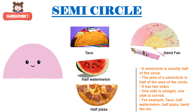Now let's learn the properties of semicircle. A semicircle is exactly half of the circle. The area of a semicircle is half of the area of a circle. It has two sides — one side is straight and another side is curved. For example, a taco, half a watermelon, half pizza, and a hand fan.